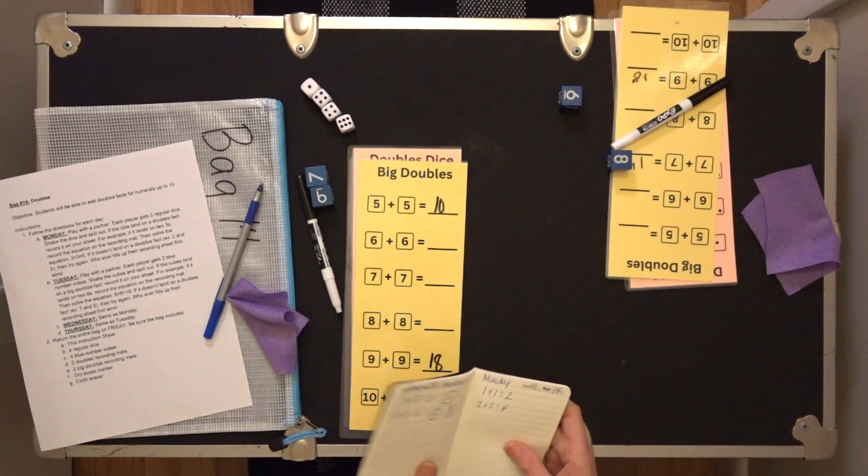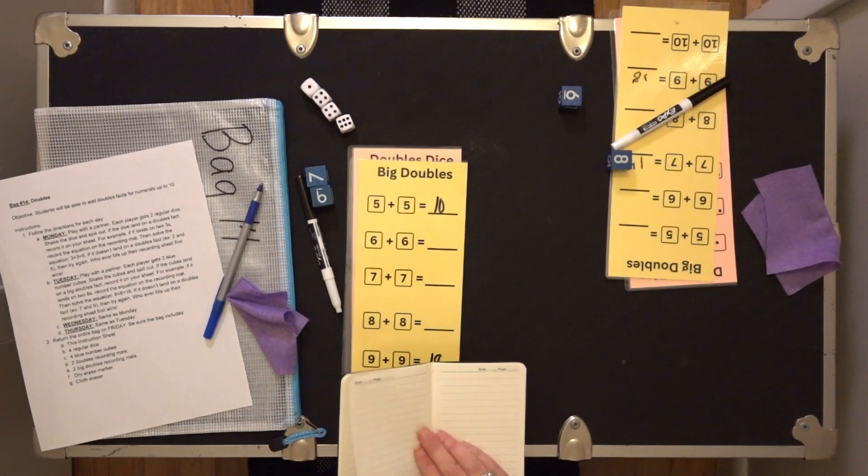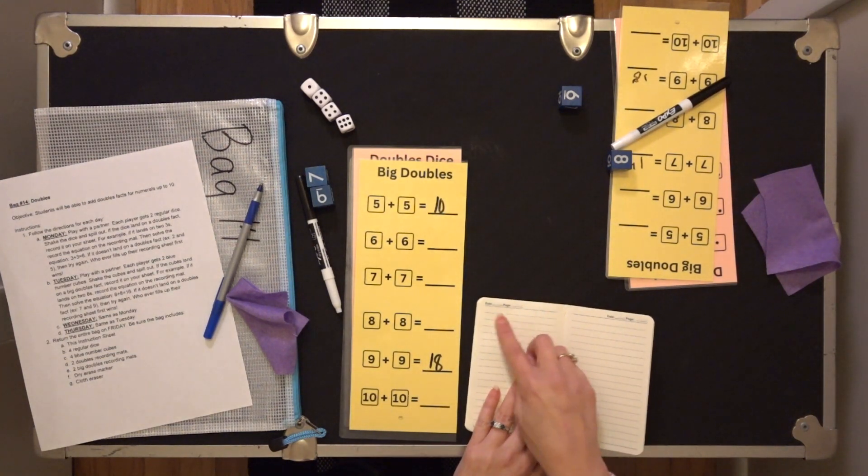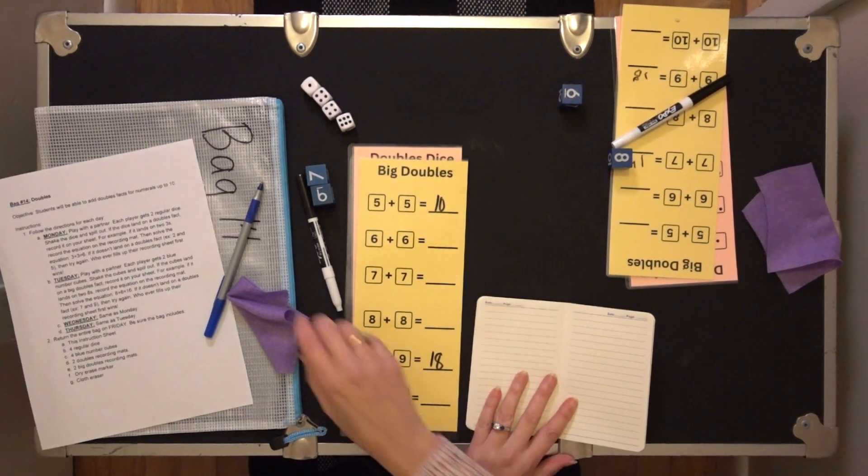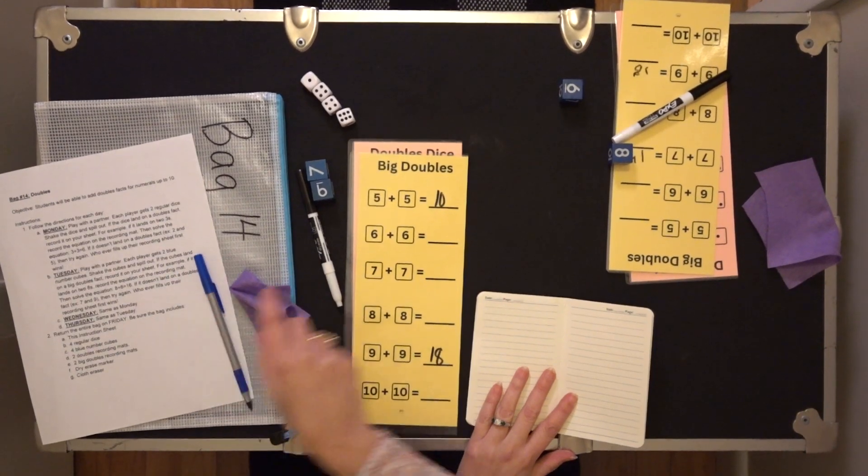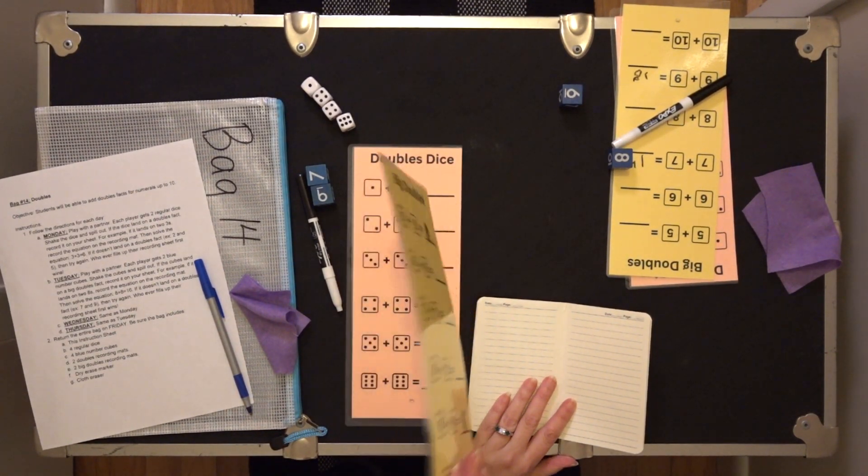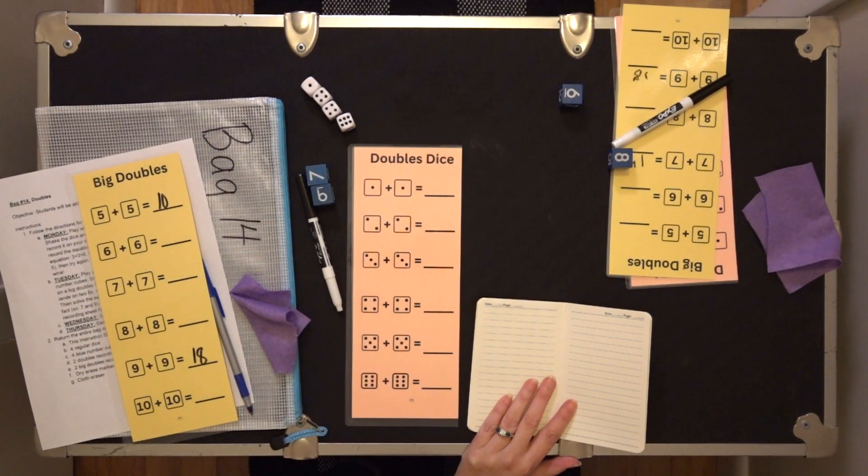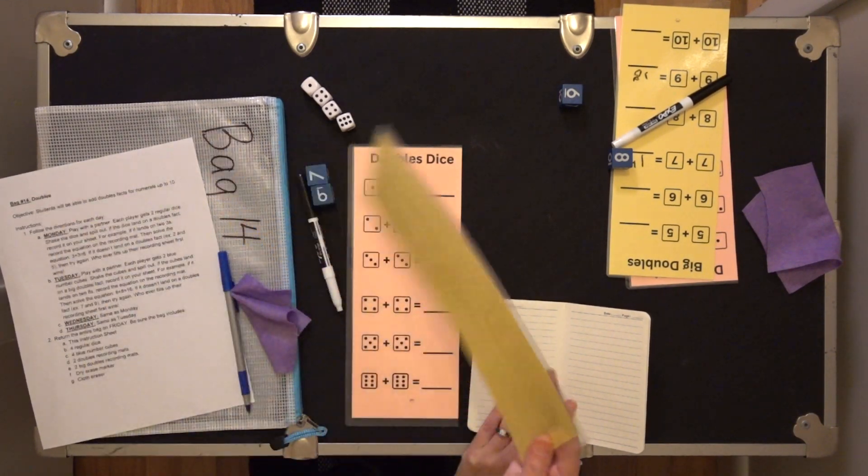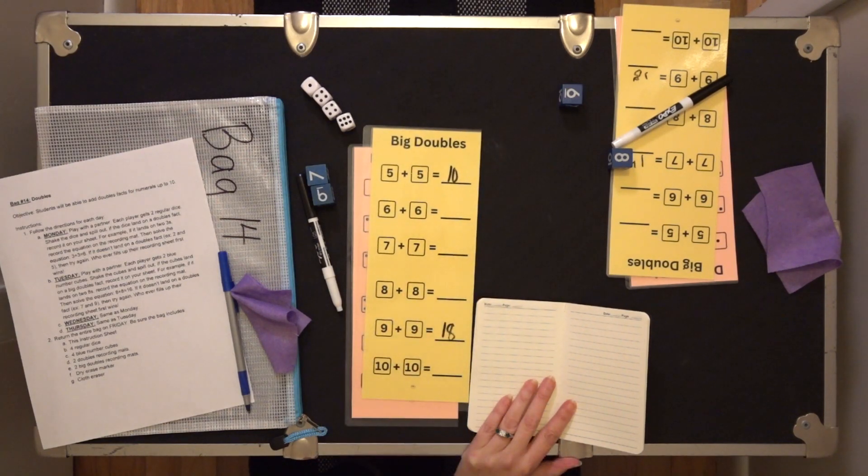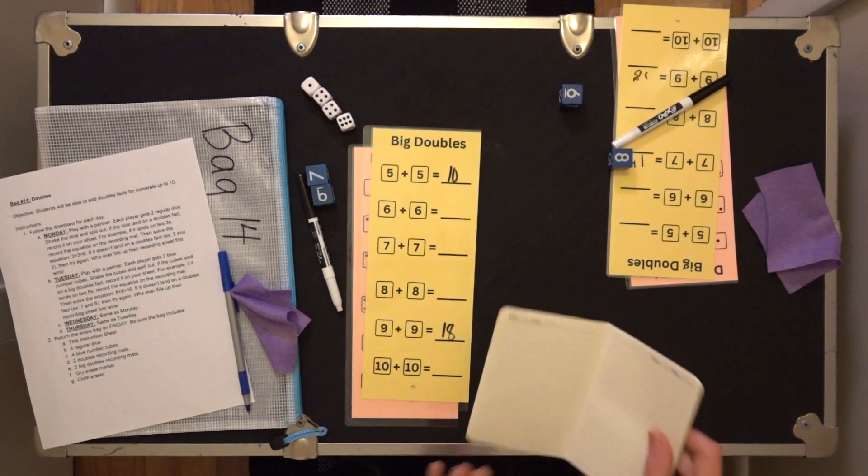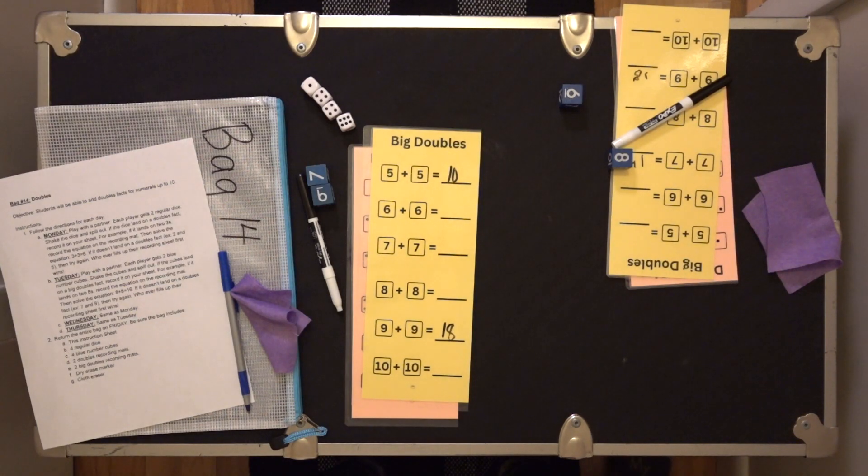And then on Tuesday, you will go to the next available page. And you will write in Tuesday. Again, you're going to cross out the page. You're going to write bag 14. And you're going to record these doubles facts. And then on Wednesday, you're going to go back to this one. And you're going to do the same thing on Wednesday. And then on Thursday, you're going to go back to big doubles. So you're going to record all of those doubles facts two times.